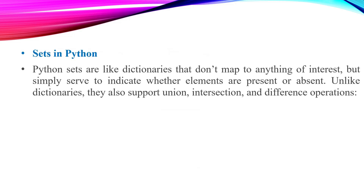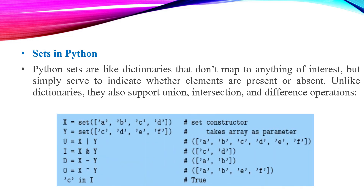Python sets are like dictionaries that don't map to anything of interest but simply indicate membership. You can check if an element is in the set. You can use set operations. For example: x = set(['a','b','c','d']) and y = set(['c','d','e','f']). Then u = x | y is the union, x & y is the intersection, and x - y is the difference.